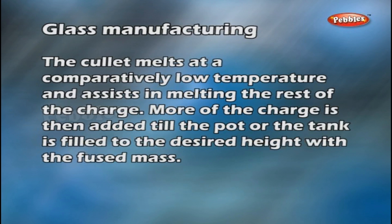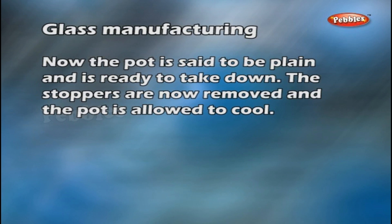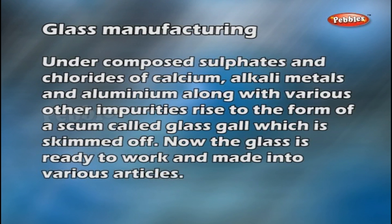More of the charge is then added till the pot or the tank is filled to the desired height with the fused mass. Test samples of the fused mass are taken out from time to time on the end of an iron hook till the opaque mass turns vitreous and transparent and is free from bubbles of CO2 and SO2. Now the pot is said to be plain and is ready to take down. The stoppers are now removed and the pot is allowed to cool.